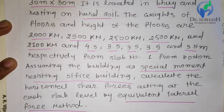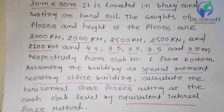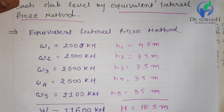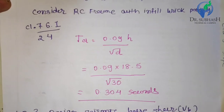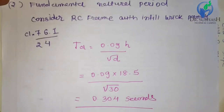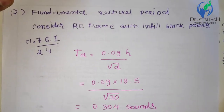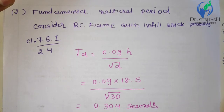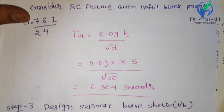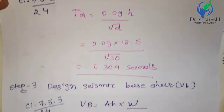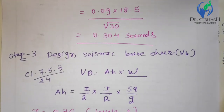Let me quickly revise the previous lectures. We were given the 5-storey building with lump masses and heights. We found the total seismic weight W. Then we calculated the fundamental natural time period TA using clause 7.6.1, and found TA = 0.304 seconds.